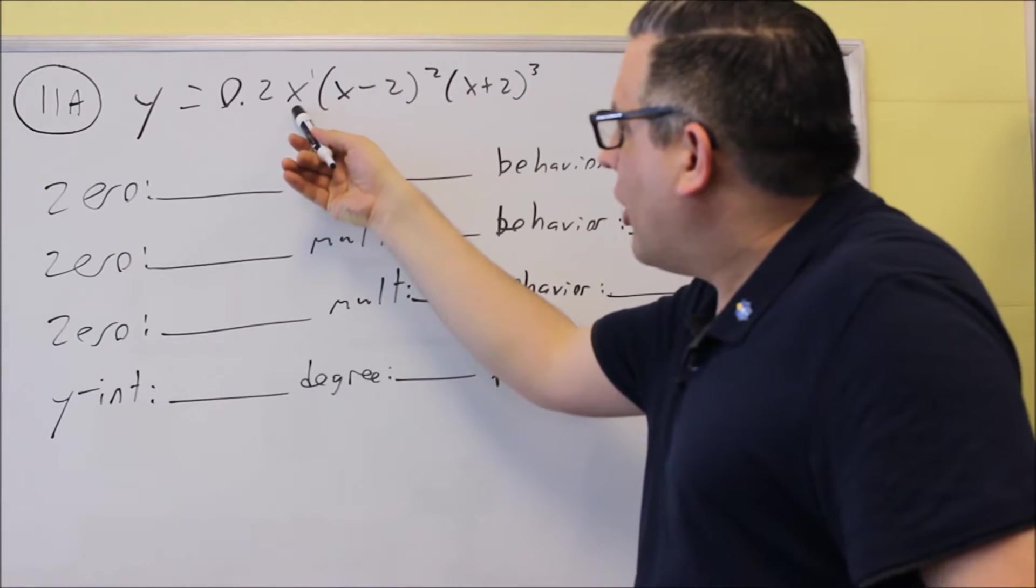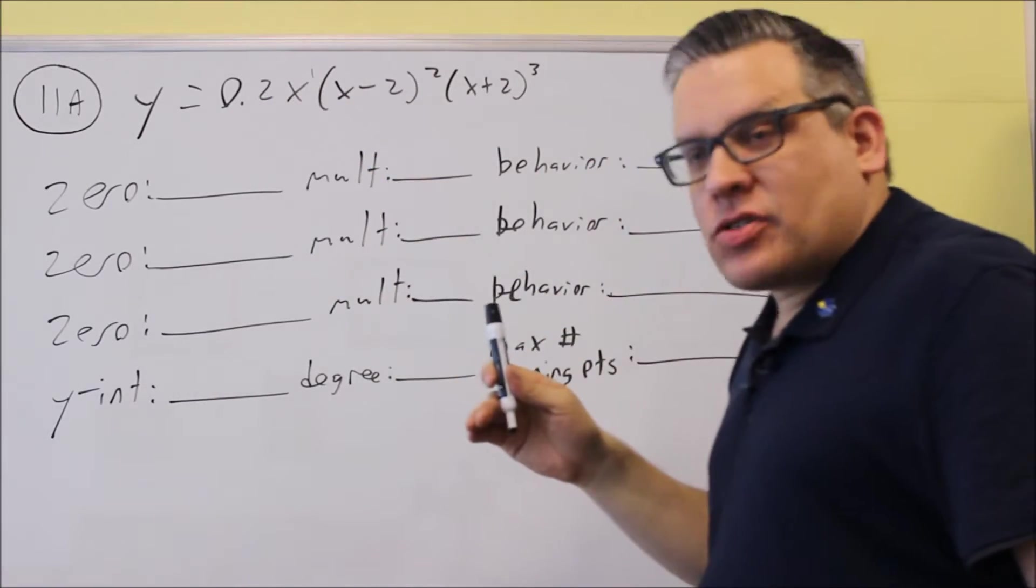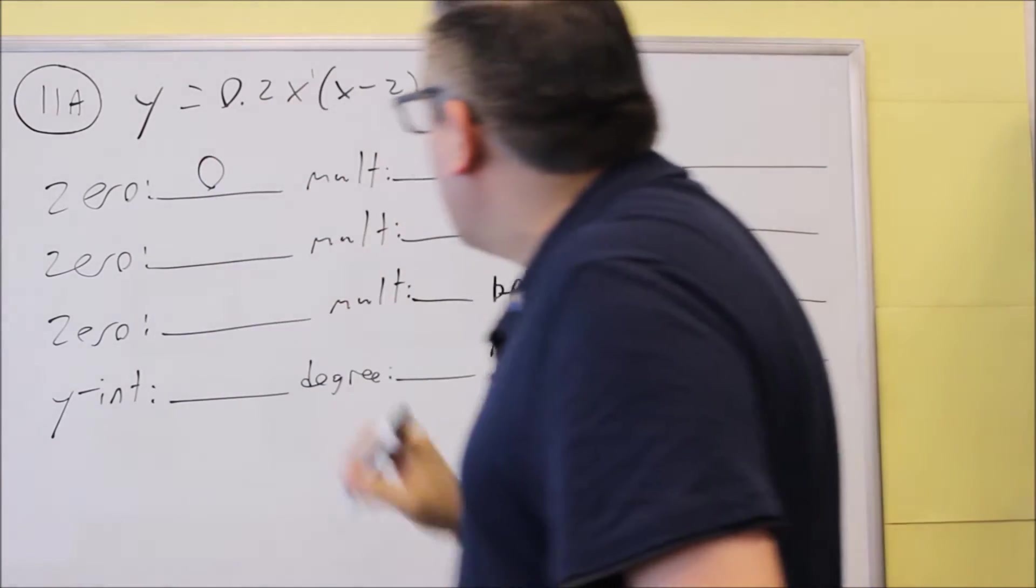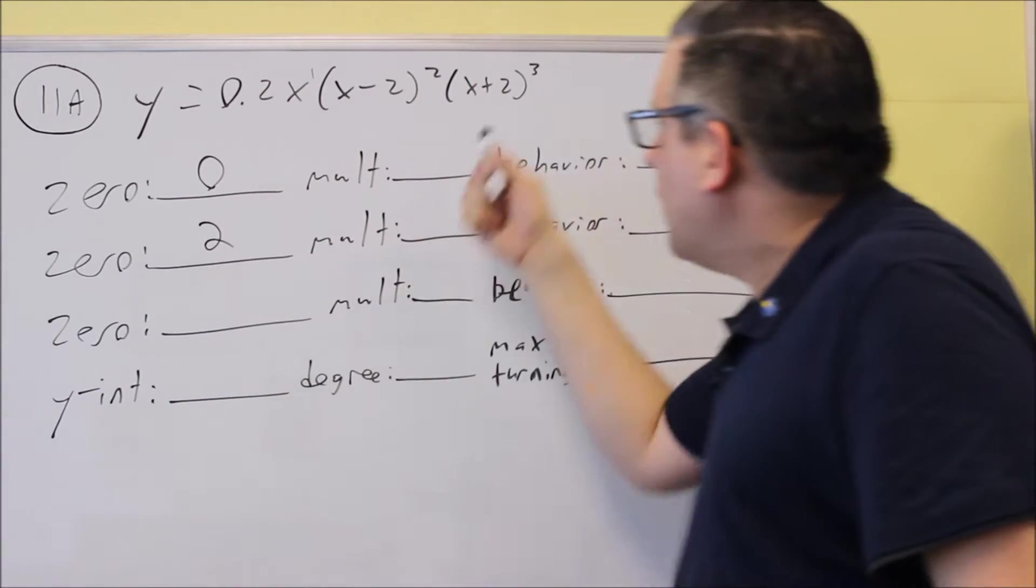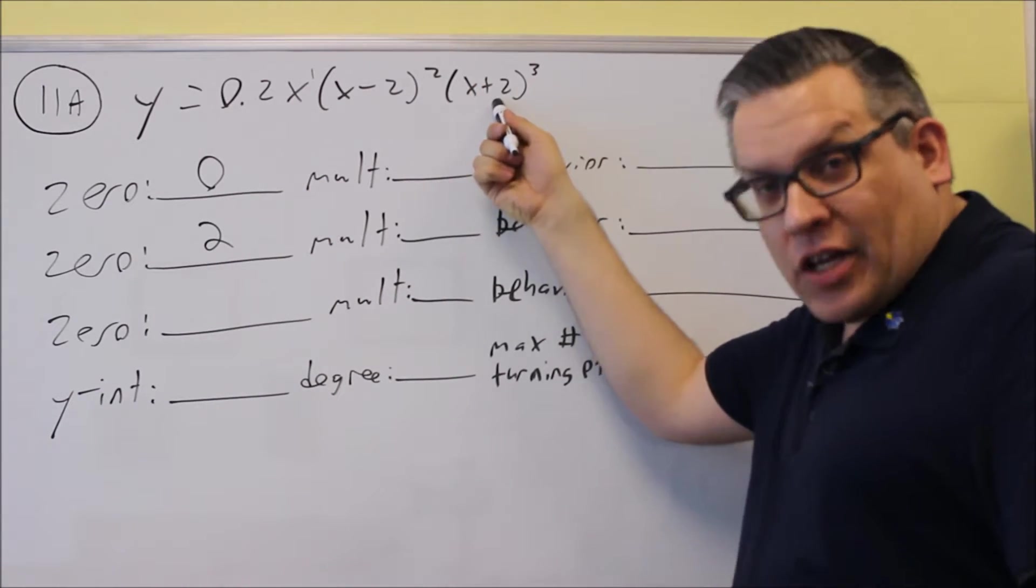The first one, we have an x, so the part that makes that zero is going to be just zero. The next one is going to be a two, and then this one is going to be a negative two.